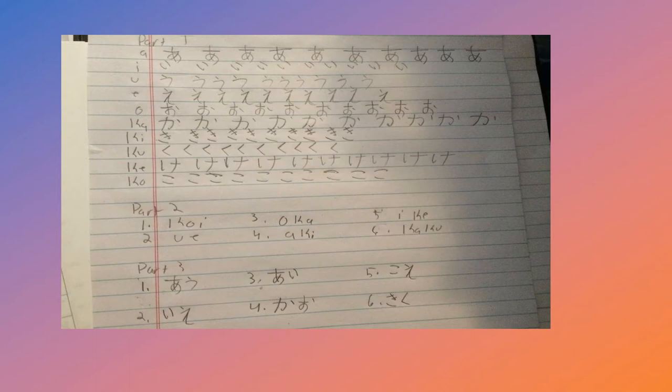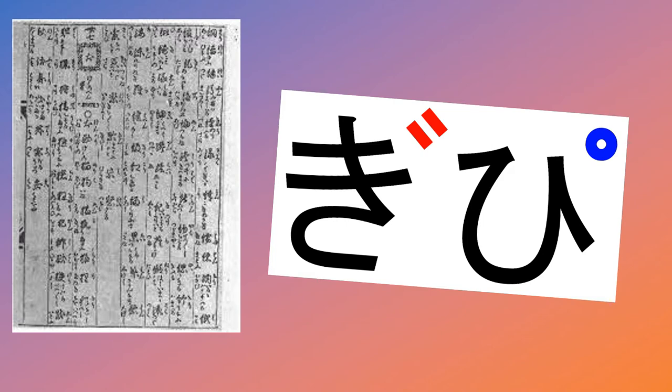Others found it aesthetically pleasing, though mine just looks like flat chicken scratch. It was also during this time period that symbols called dakuten and handakuten were utilized to express the change of sound in the kana.